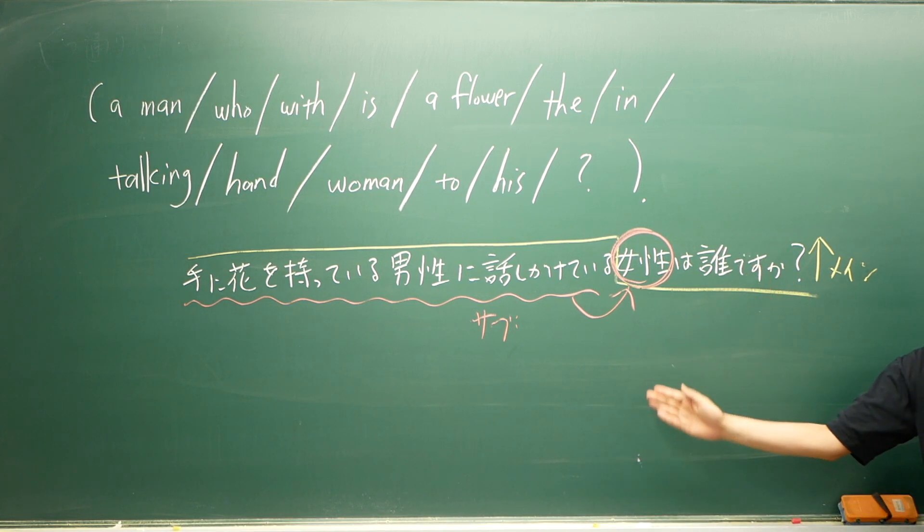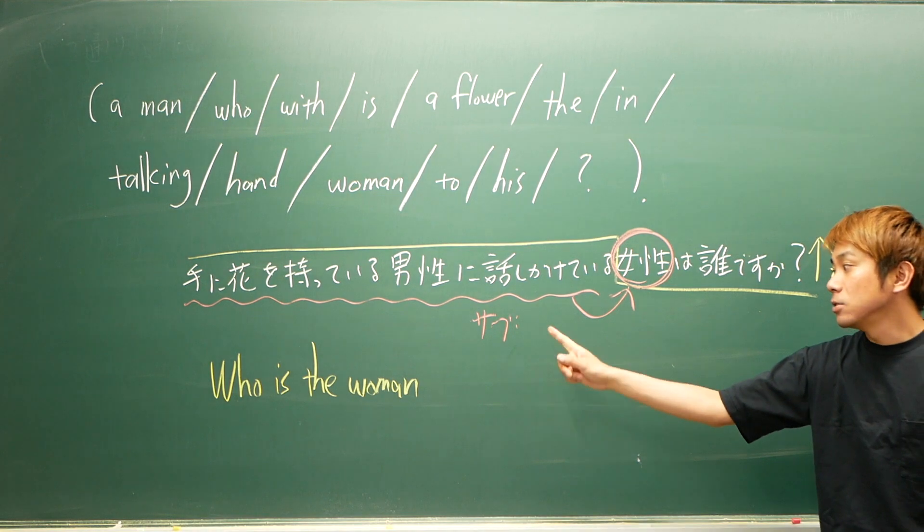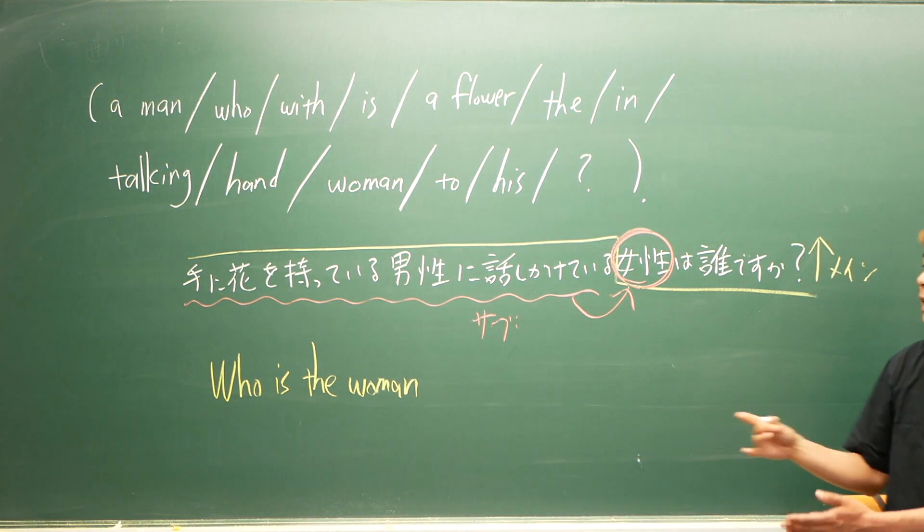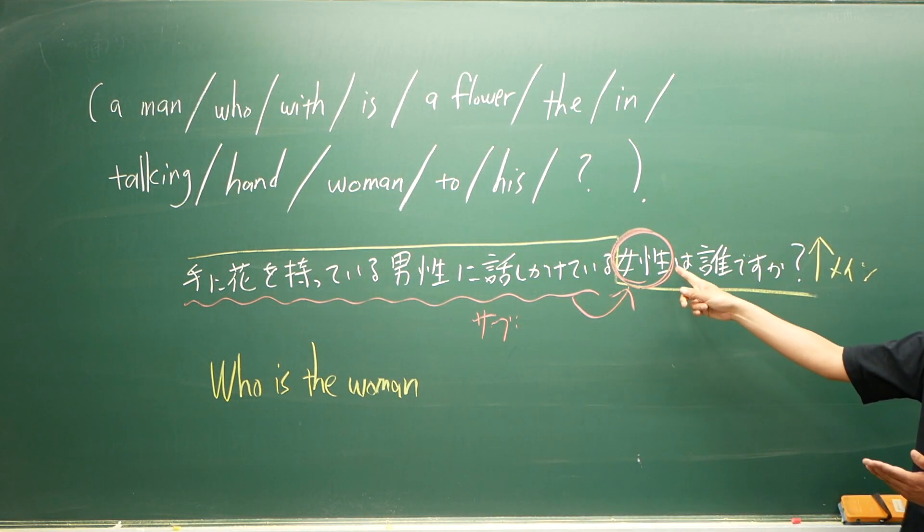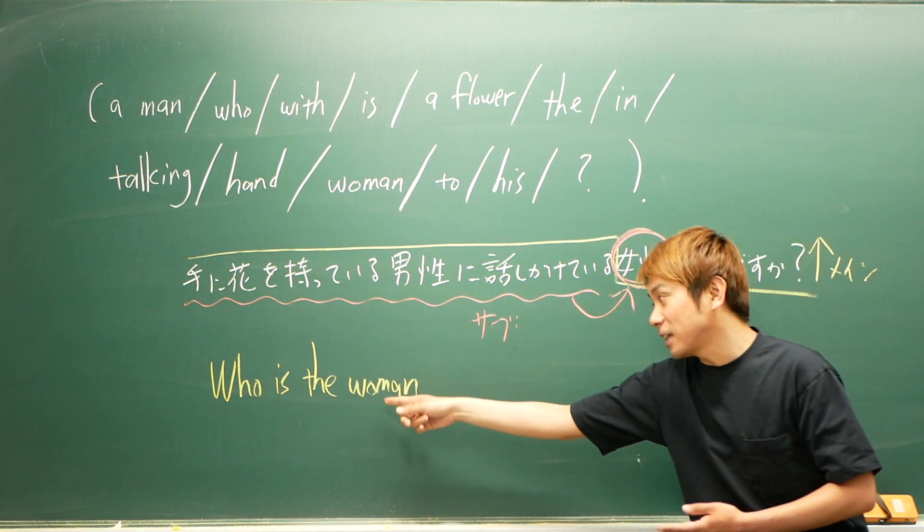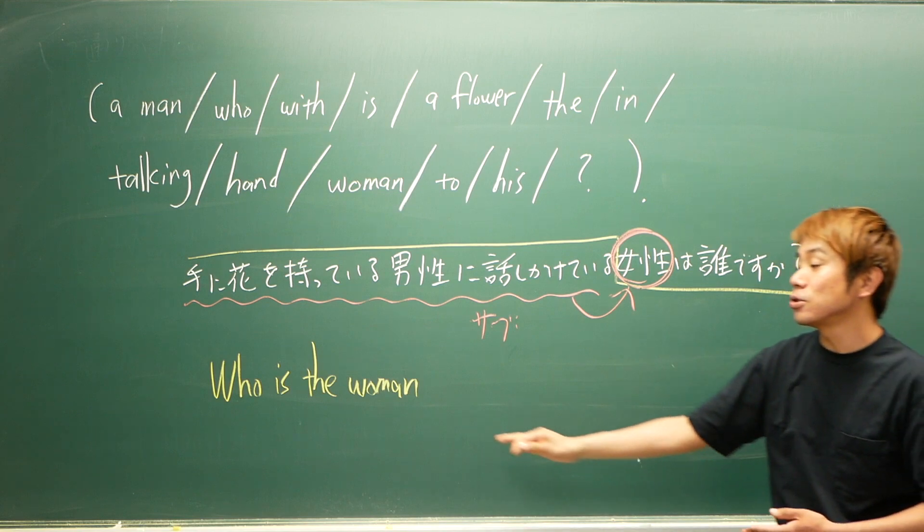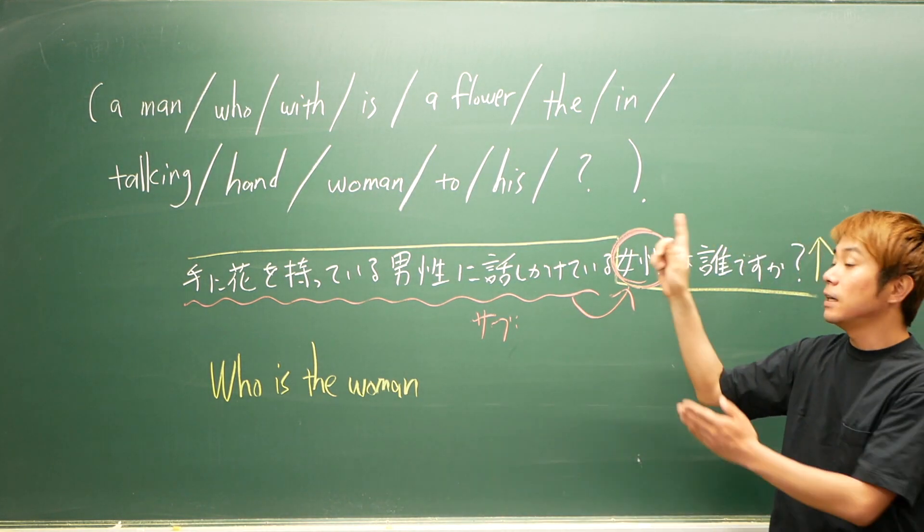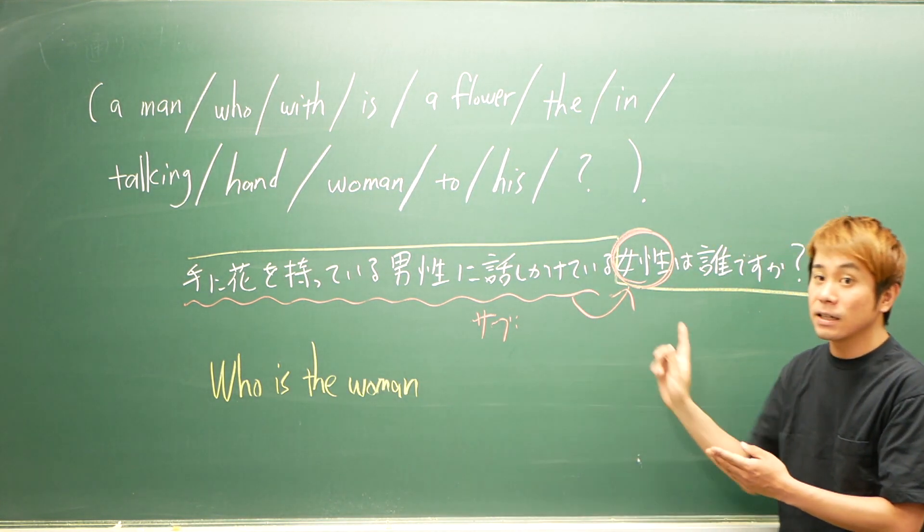話戻すけど、ここのやつを使いながら言おうとすると、非常にシンプルですね。Who is the woman? 女性は誰ですかってまず言い始めた。そしたら、この女性に対して、手に花を持っている男性に話しかけている女性って感じで、ここからなんか上手いことを修飾してあげればいい。時には前置詞かもしれないし、時には関係代名詞かもしれない。